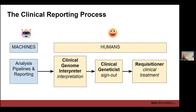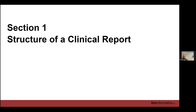There are three or four of us in clinical genome interpretation who do this. We discuss each case amongst ourselves, make a report, and send that report to a clinical geneticist — a medical doctor — who signs off on it. The report is then given to the requisitioner, who is the person who originally sent us the tissue sample, and they use it to inform their clinical treatment decisions.